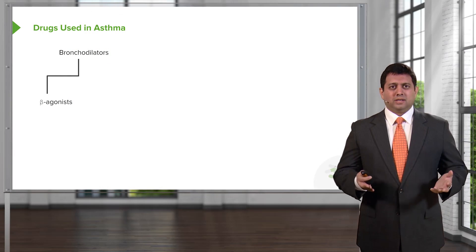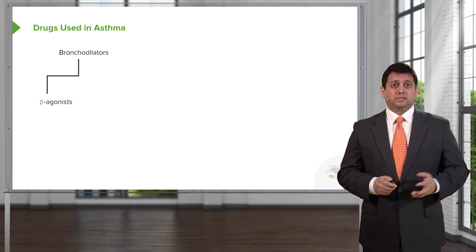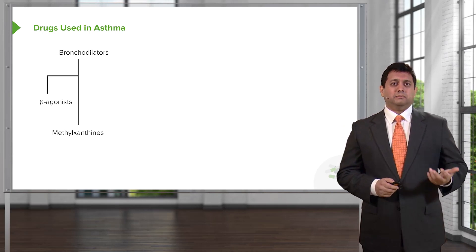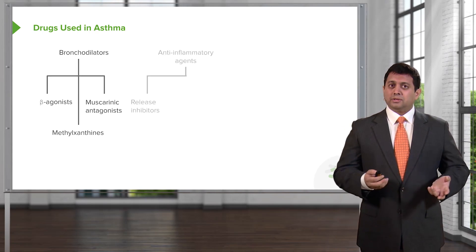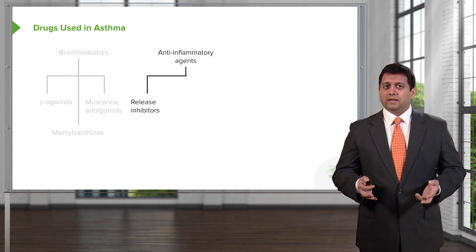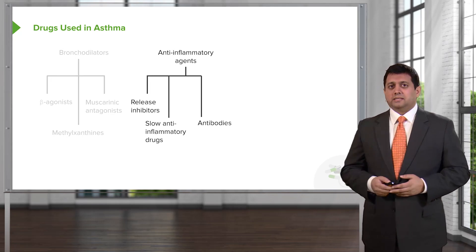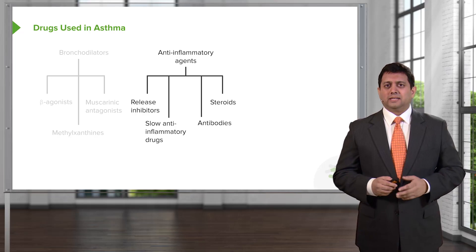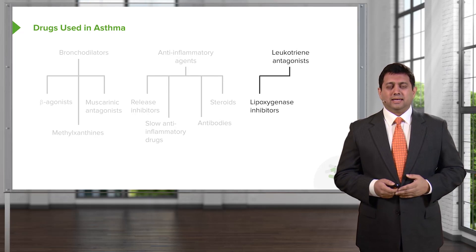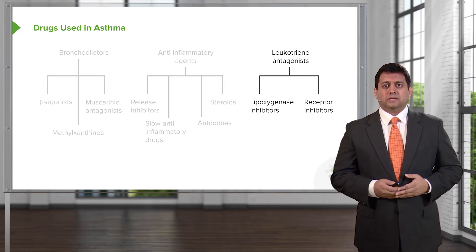When we talk about drugs used in asthma, we have lots of choices. We have the bronchodilators such as the beta-agonists, the methylxanthines, and the muscarinic antagonists. We also have a choice of a number of anti-inflammatory agents, including release inhibitors, slow anti-inflammatory drugs, antibody-based therapies, and of course steroids. And finally, we have the new class of drugs called the leukotriene antagonists. They can be lipoxygenase inhibitors, or they can be receptor inhibitors.